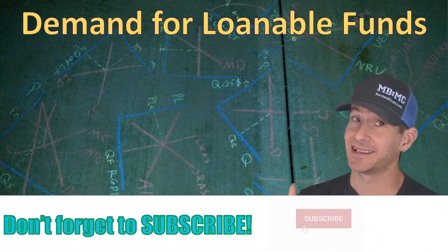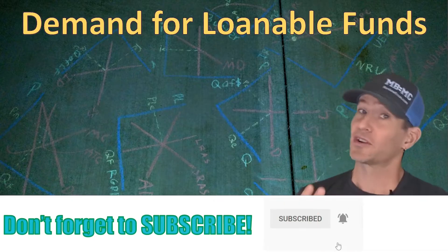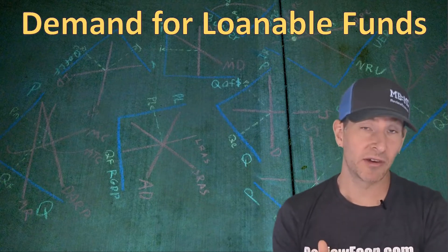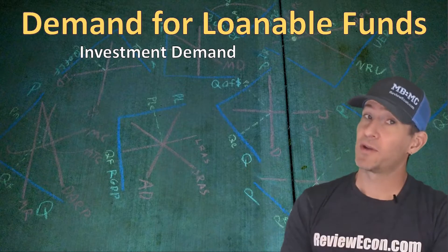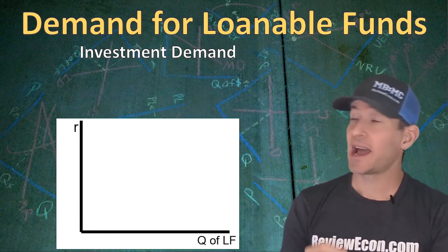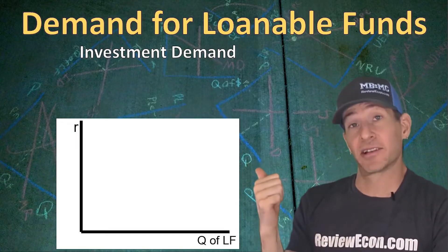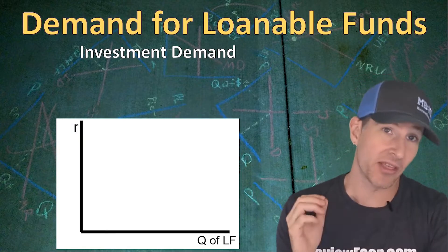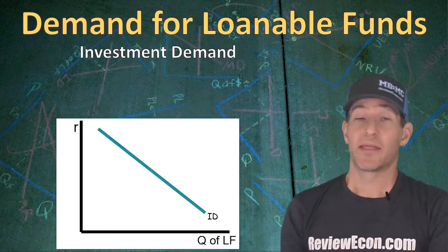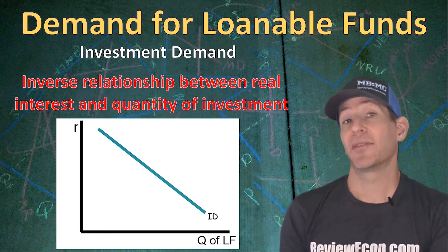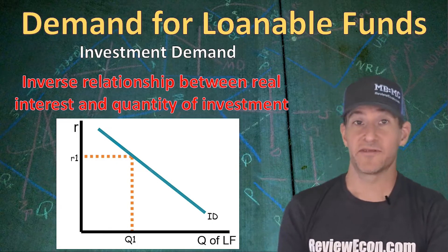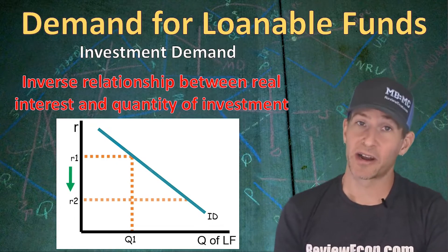Since the loanable funds market is a market, you already know it's going to have a demand and a supply curve. First, we're going to talk about that demand curve. The demand for loanable funds includes all borrowing within the economy, but for your exam it's primarily going to be comprised of the investment demand. On the x-axis we have the quantity of loanable funds, and on the y-axis we have the real interest rate — you can abbreviate it as little r. The demand for loanable funds, as well as the investment demand curve, is downward sloping, meaning an inverse relationship between the real interest rate and the quantity of loans demanded. At high interest rates we have a low quantity of loanable funds, and at low interest rates we have a high quantity of investment demanded.